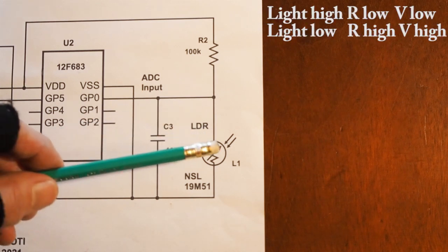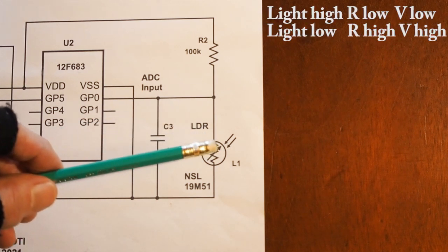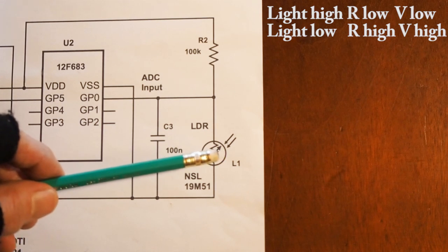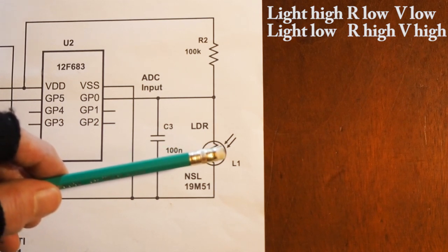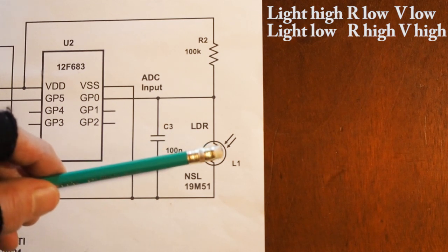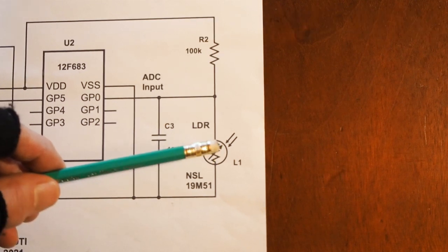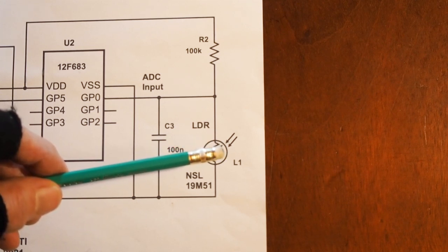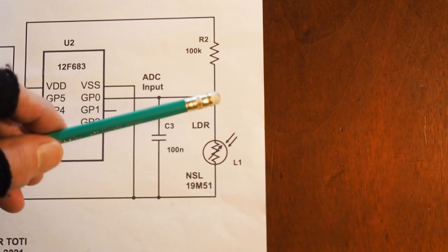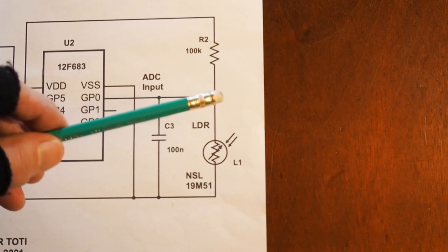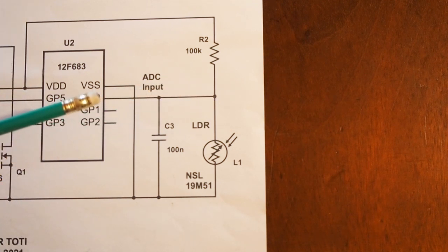Now, a light-dependent resistor has a low value of resistance with the light shining on it and no train present, and a higher resistance when the train obscures the light. As the value of the resistance of the LDR increases, the voltage at the midpoint also increases, and this can be detected by the PIC.